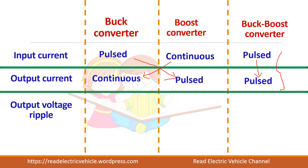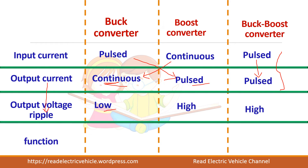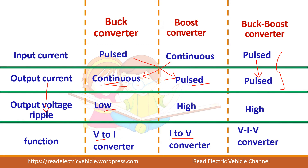The output voltage ripple basically depends upon the output current. If the output current is continuous you will get low ripple; if it is pulsed you will get high ripple. Regarding the function of each: the buck converter is basically a voltage-to-current converter, whereas the boost converter is a current-to-voltage converter, and the buck-boost is a voltage-current to voltage converter.